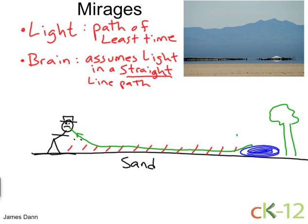Same with the tree. These light rays come down, get into the fast zone, and then back up into his eye. The light does this because it takes the path of least time. And it will get there quicker, even though it's traveling a little extra distance, by going down into the fast zone and then coming back up. That's the path of least time.